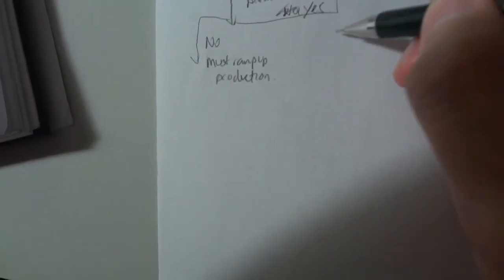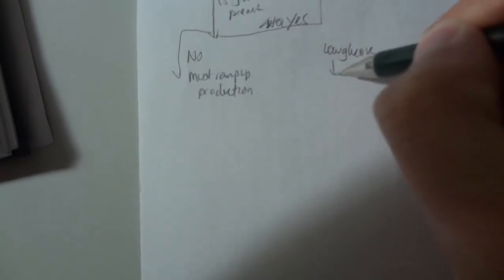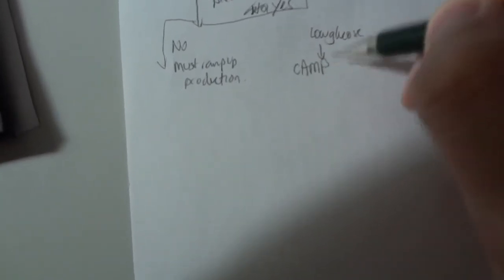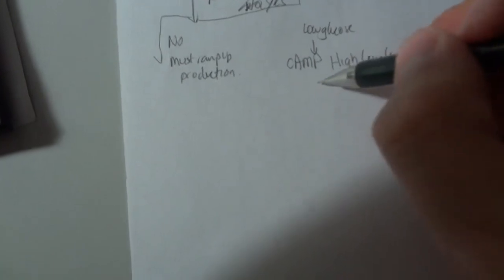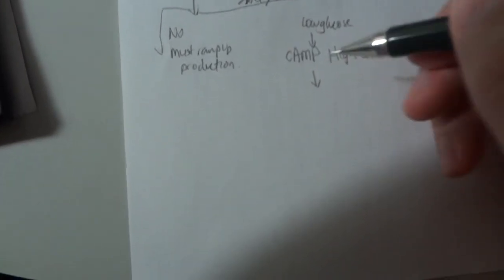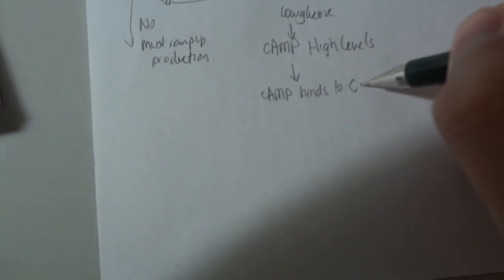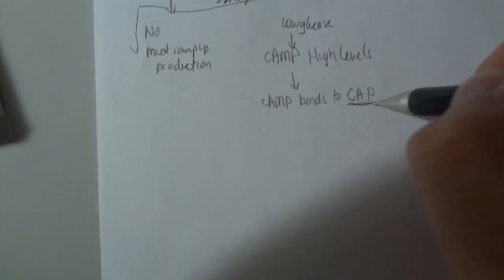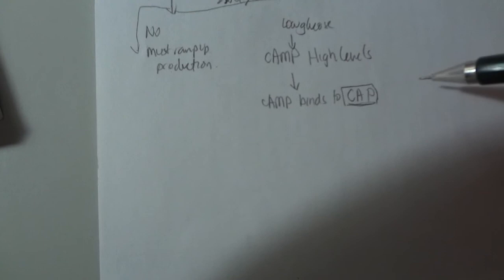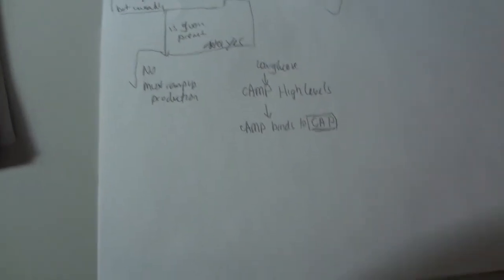So what happens when there's low glucose? Elsewhere in the cell, we'll have low glucose levels which causes high levels of cyclic AMP. And this binds to a protein called CAP. So cAMP binds to CAP. And CAP is an activator. When it's activated and binds to the DNA, it encourages transcription.